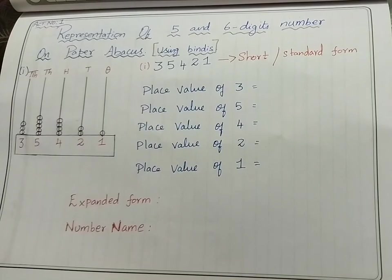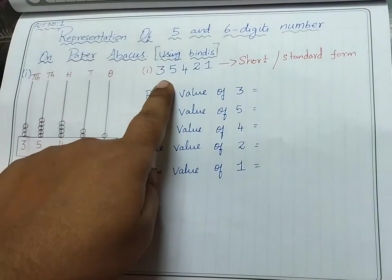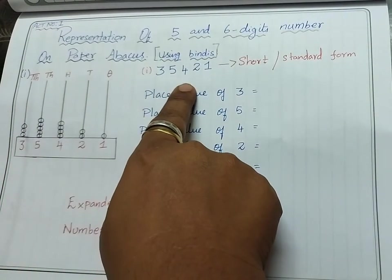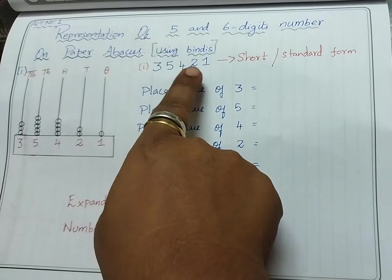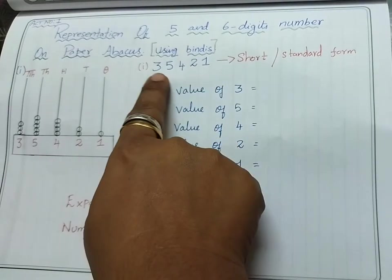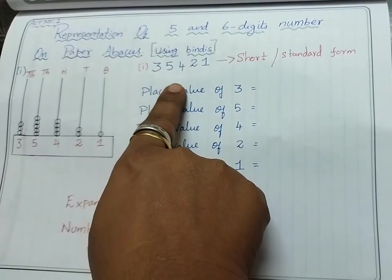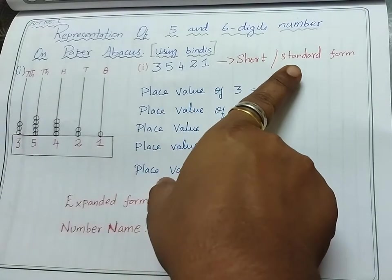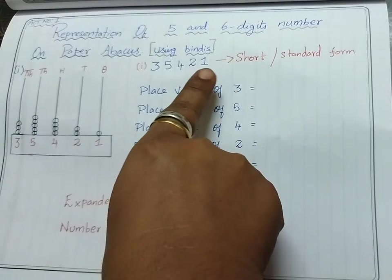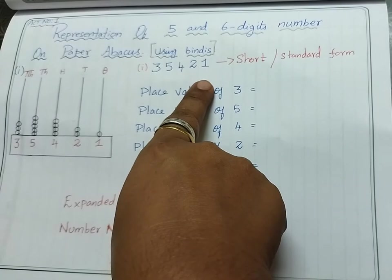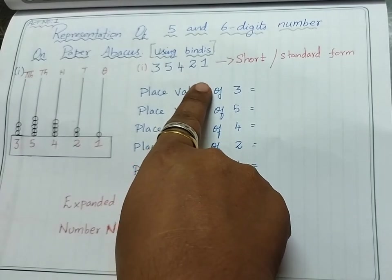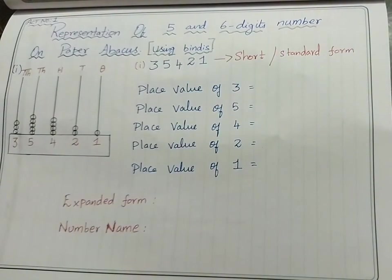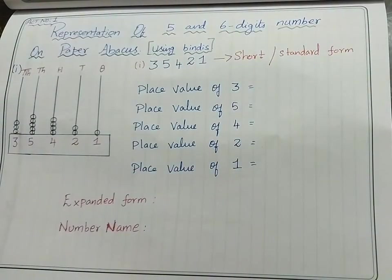Let me do the first example. The number given is 3 5 4 2 1. This type of number representation is called short form or standard form. Now we are going to write the place value on the top of the number. What is the place value of this number?